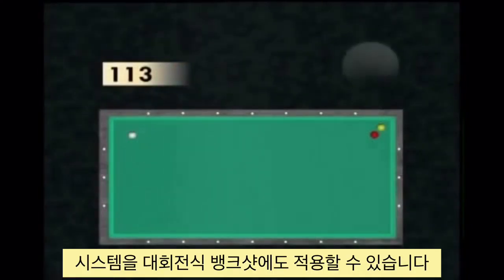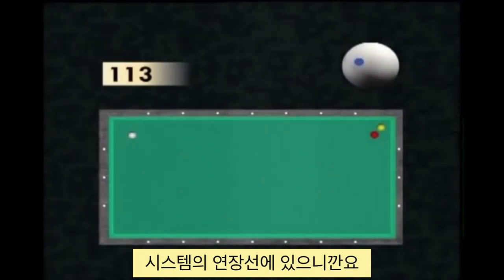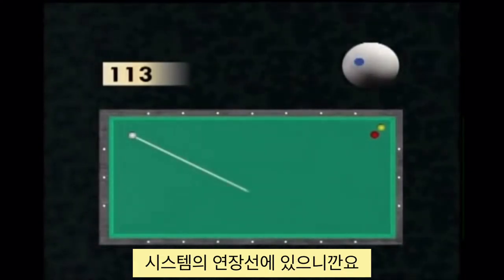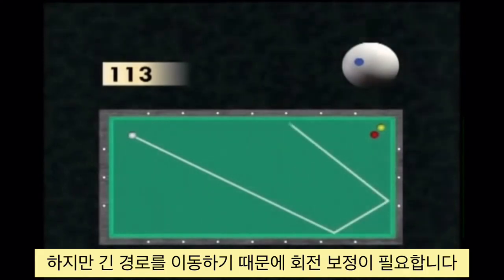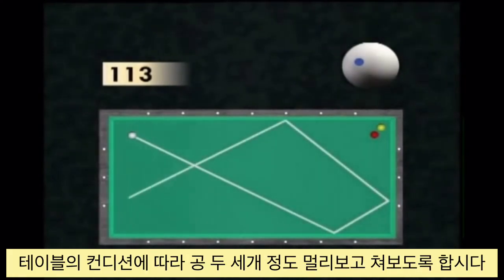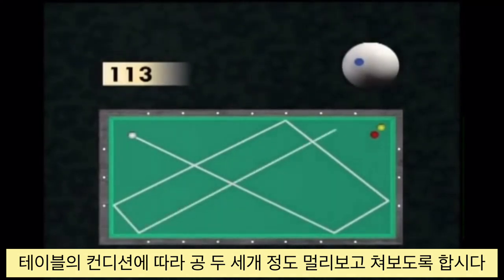You can even use a system to play shots over five or more cushions. It is an extension of the previous system. Since the course is longer, the loss of English is corrected at the beginning by aiming two to three ball sizes further on, depending on the table.